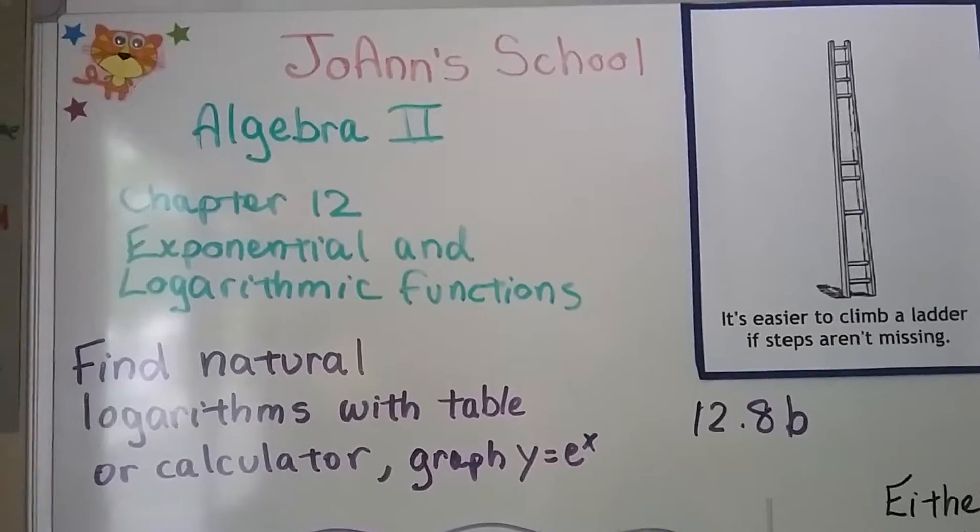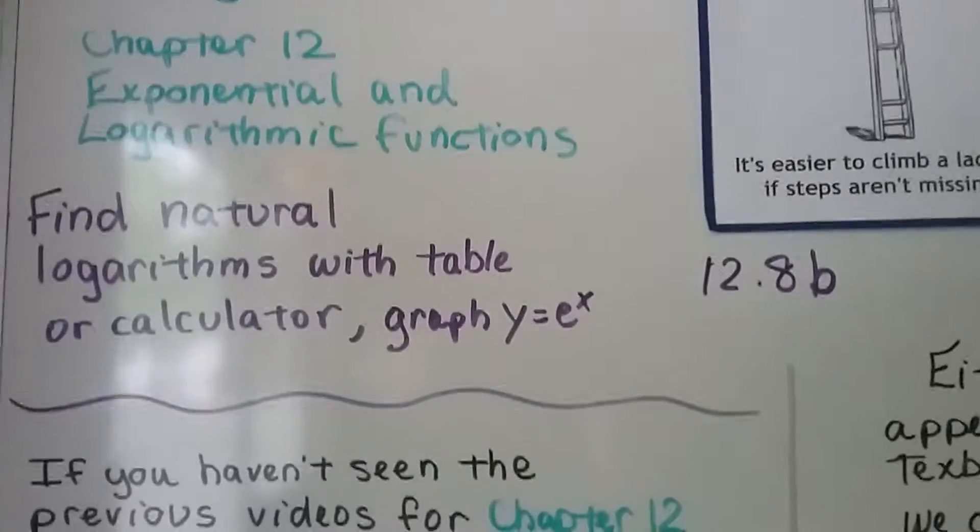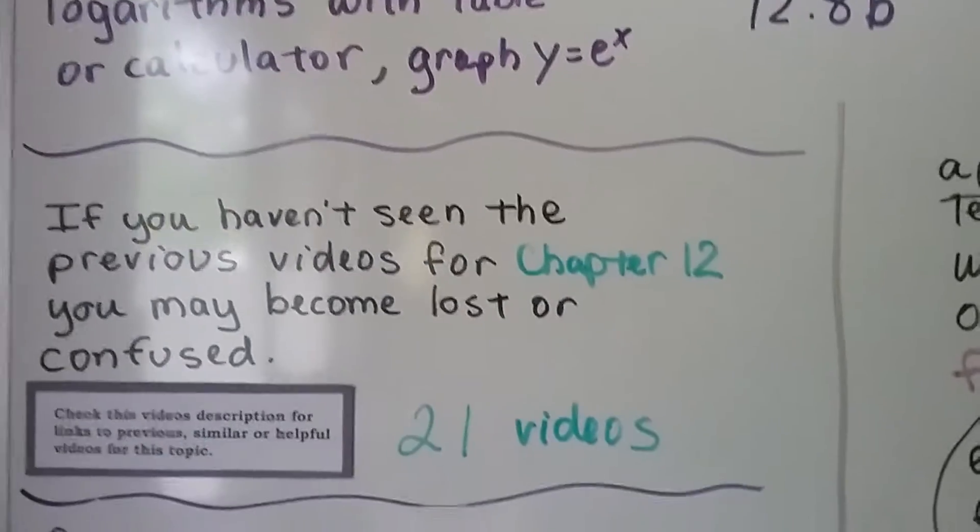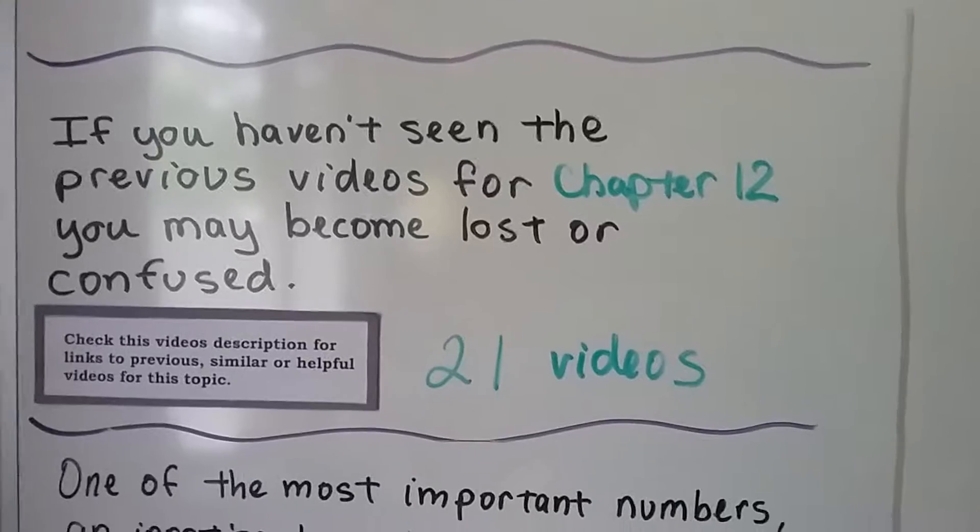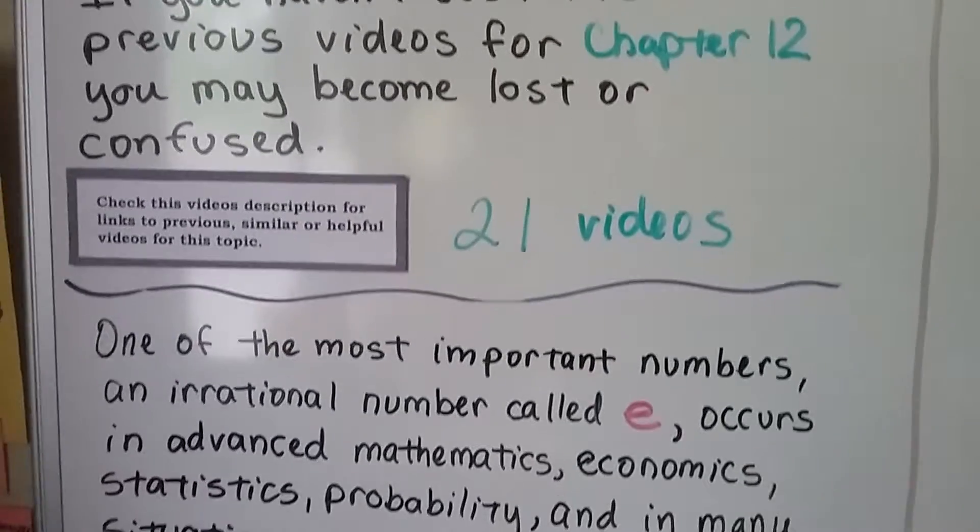We're going to find natural logarithms with a table or a calculator, and we're going to graph y equals e to the x. We're at 12.8b, and there's now 21 previous videos for this chapter about exponential and logarithmic functions that are linked in the description.